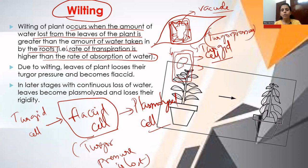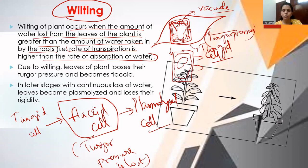When observed under a microscope, the plasmolyzed cell shows the cell wall and cell membrane separately, along with the shrunken vacuole. In a turgid cell, the vacuole is full; in a flaccid cell, turgor pressure is lost; in a plasmolyzed cell, the membrane separates from the wall and the vacuole shrinks. Plant cells becoming plasmolyzed causes loss of rigidity.